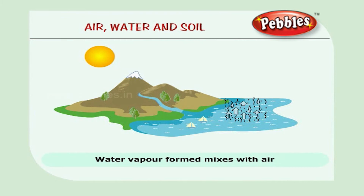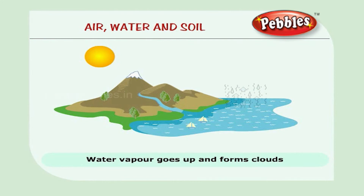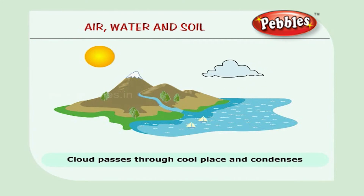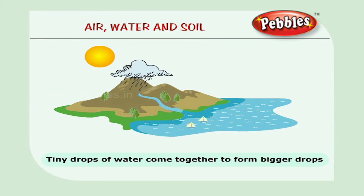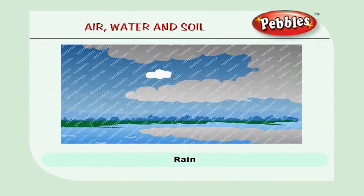The water vapor formed mixes with the air. When it goes up in the air, it forms clouds. If the cloud passes through a cool place, the water vapor condenses. The tiny drops of water come together to form bigger drops, and these drops come down as rain.